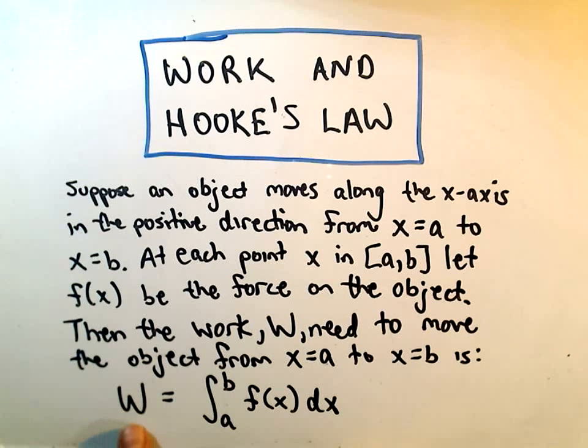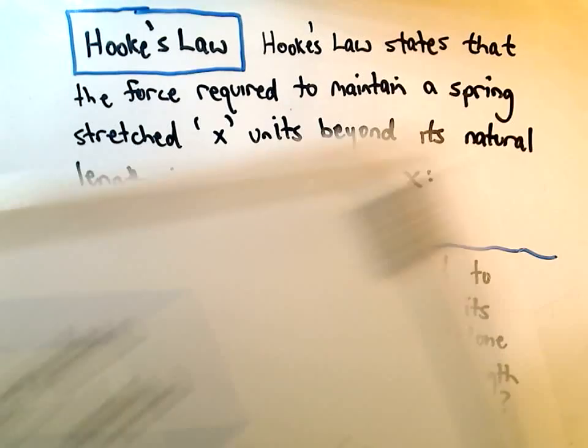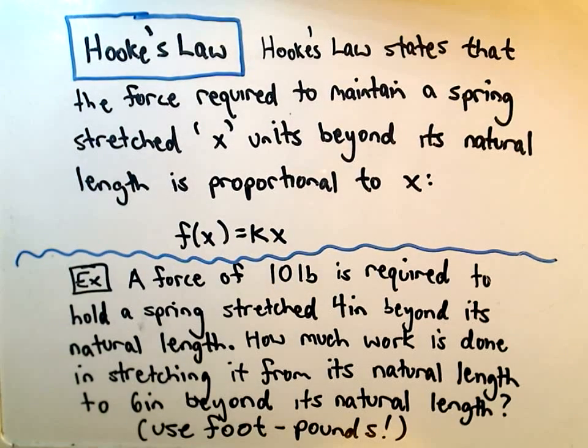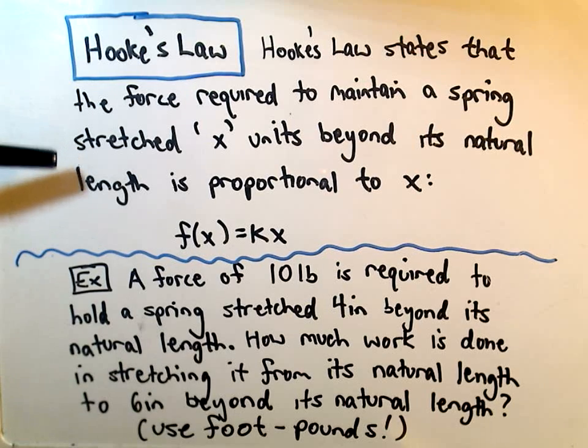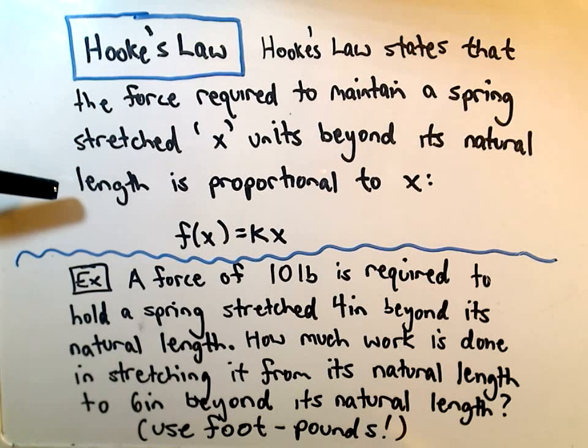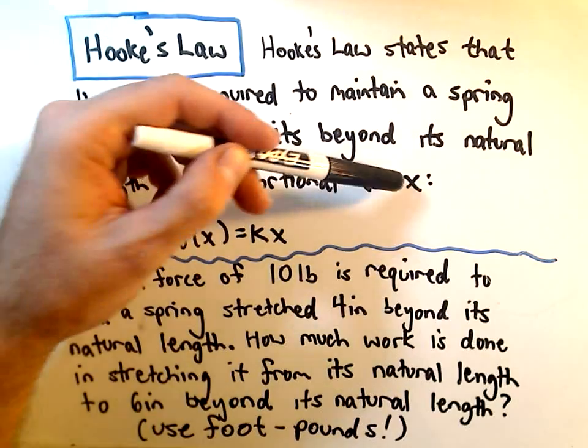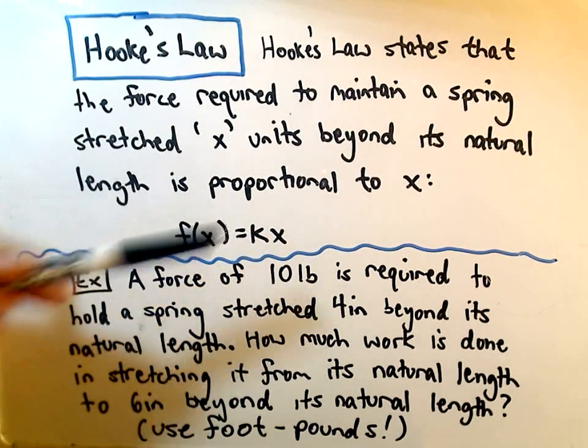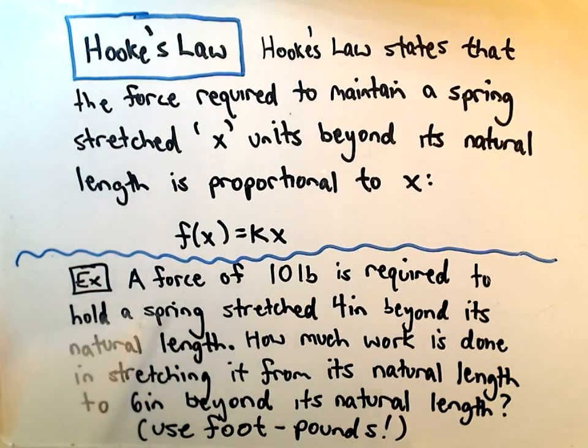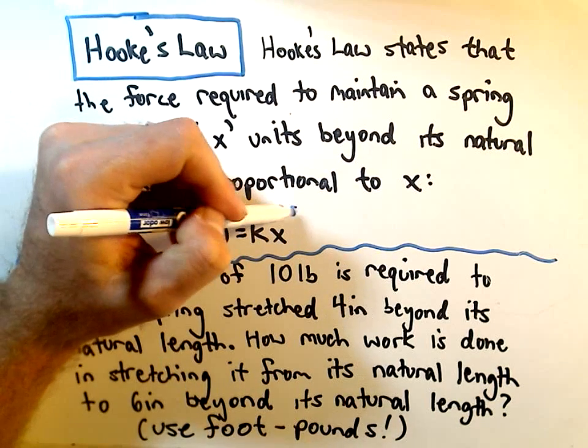So it basically says, to calculate work, you integrate over the force function. So, what Hooke's Law says, the force required to maintain a spring that stretched x units beyond its natural length is proportional to the distance that you stretch it, which basically says the force function is going to equal k times x. This value k is just what's called the spring constant.